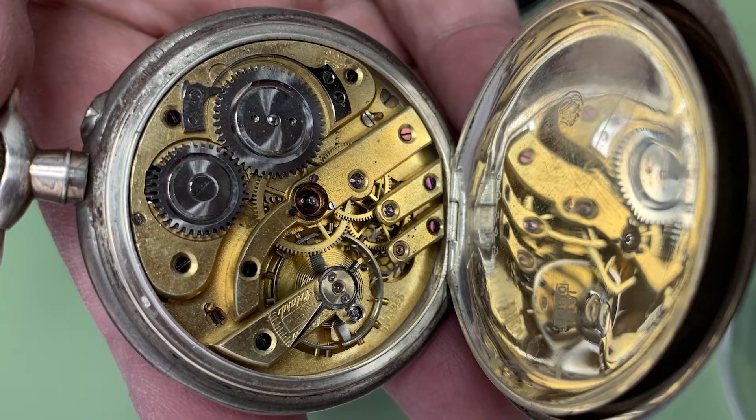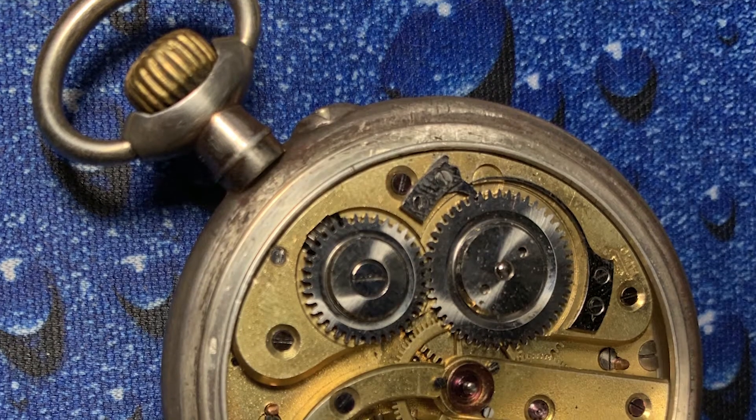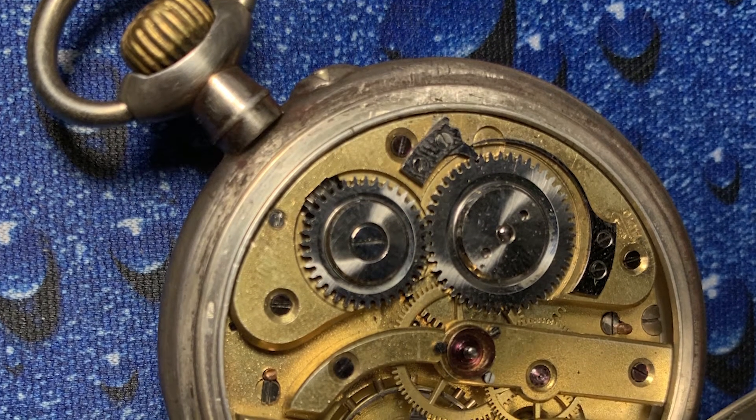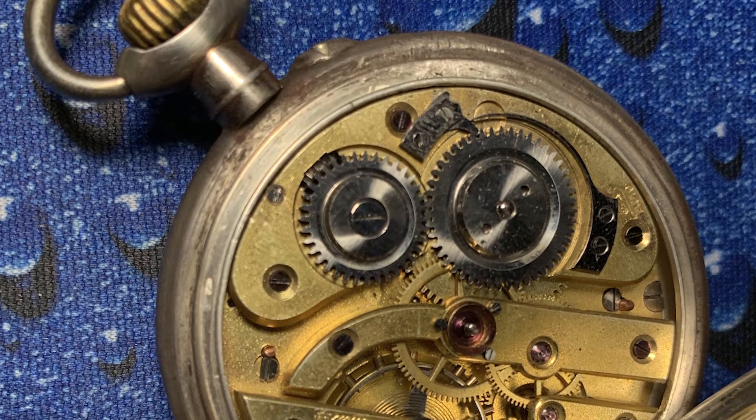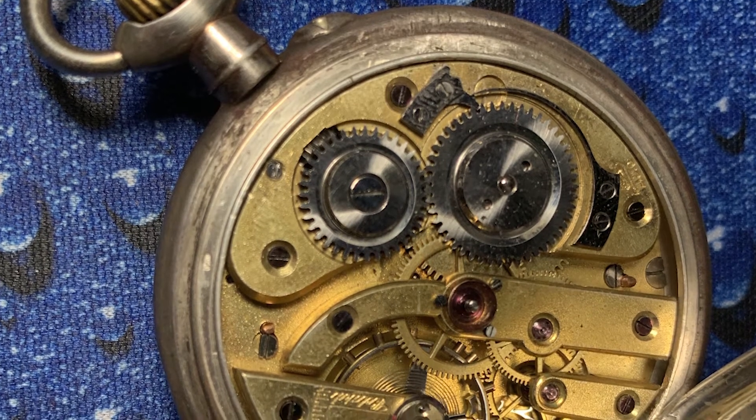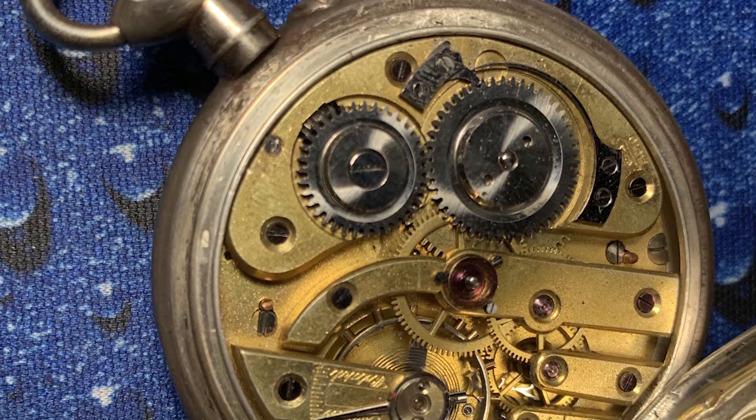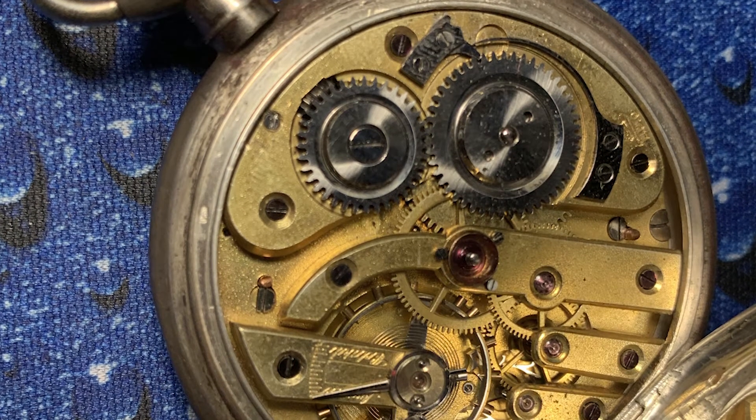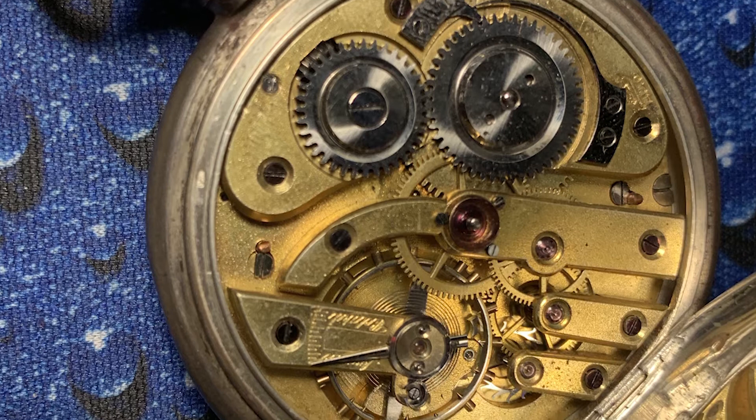And then the spiral breguet, which means the breguet overcoil hairspring, which was at the time, like state of the art. That was the best kind of hairspring that you could get. And from what I can tell, this one is an authentic overcoil style.